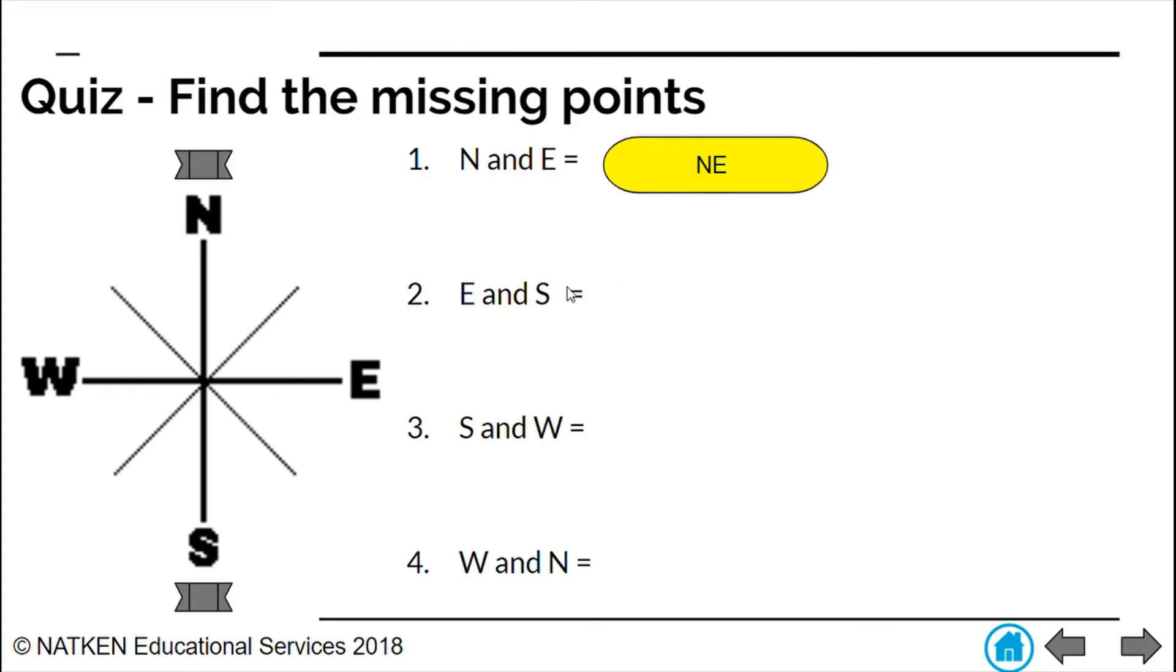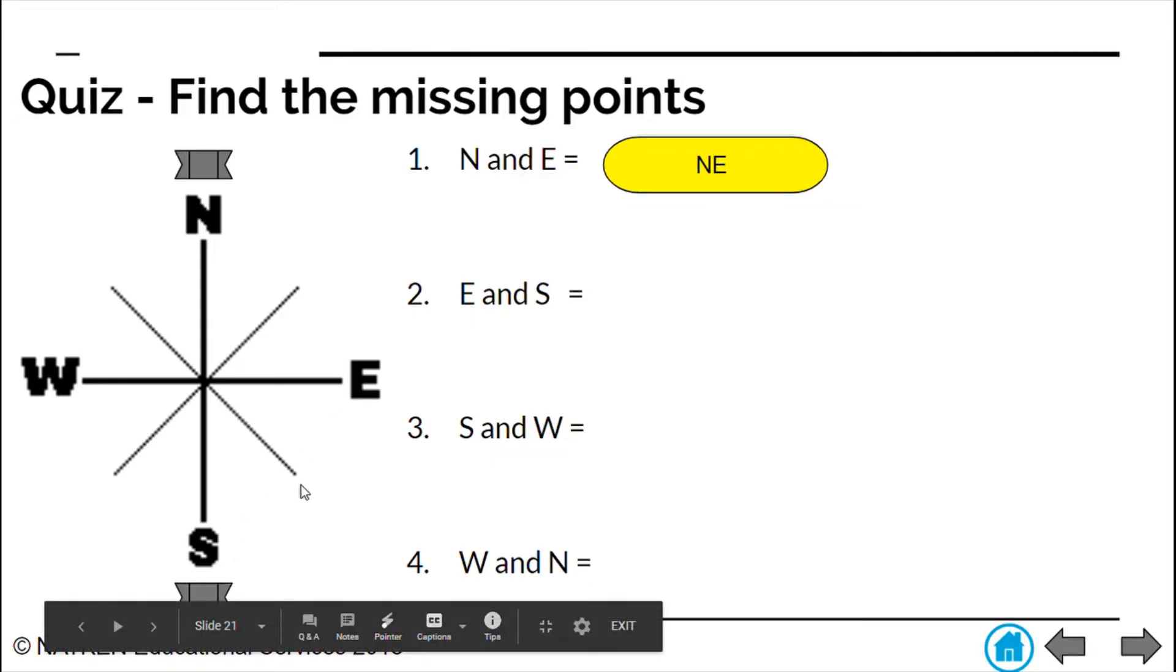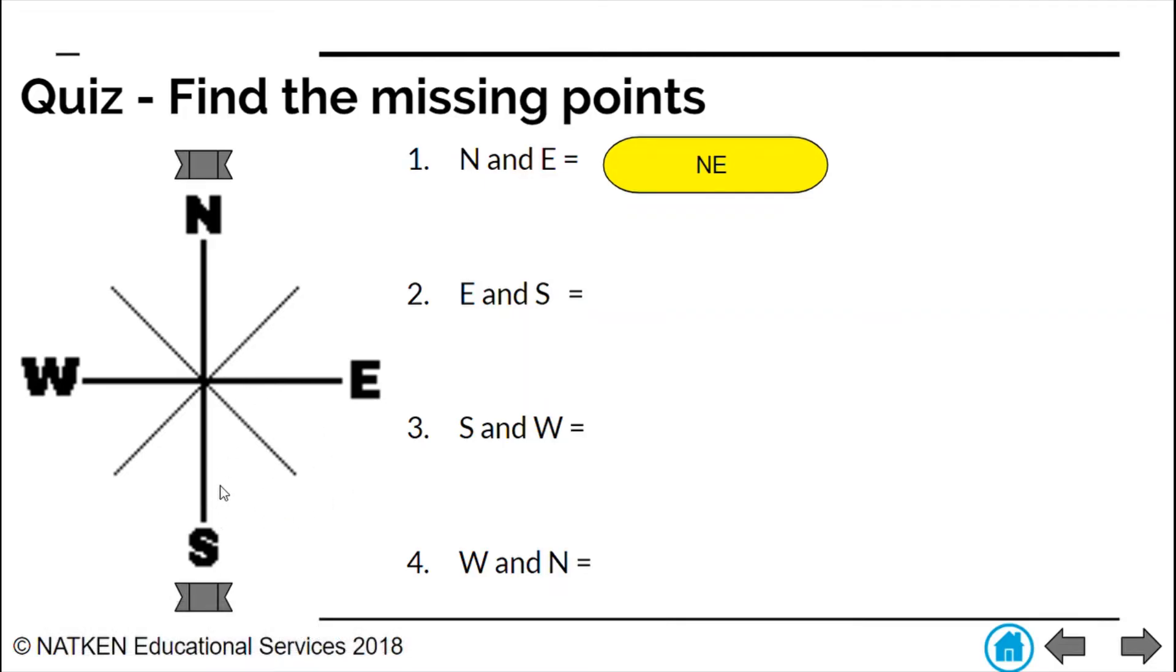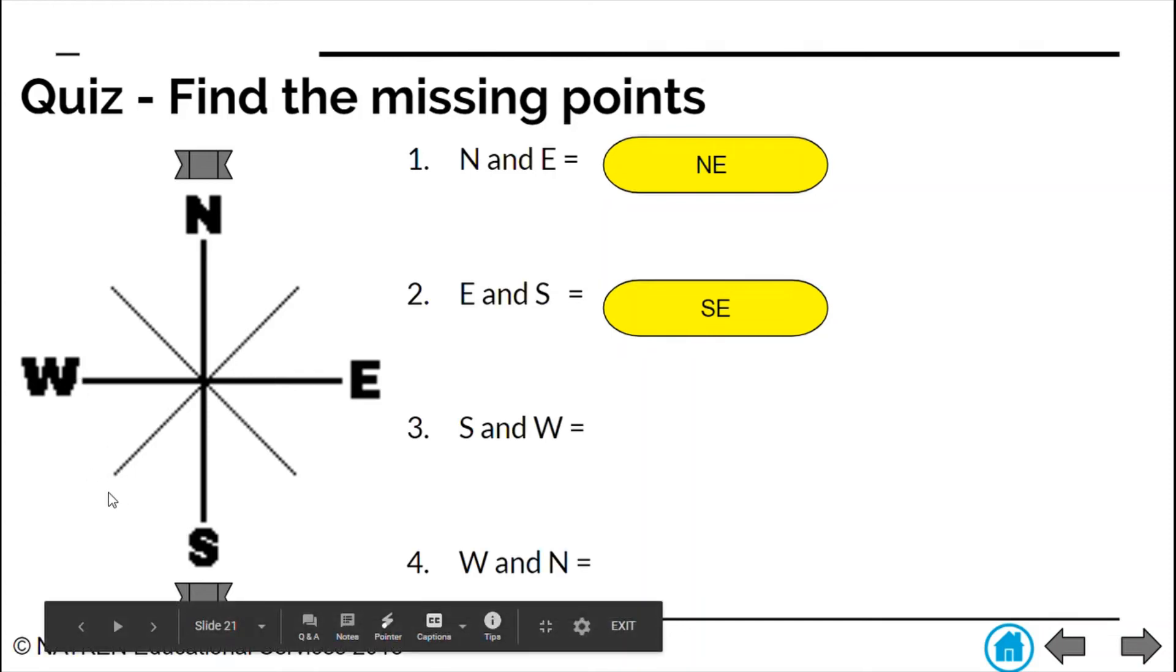Secondly, for east and south in between here we have this area blank. Again we have south which would have been our queen or royalty. So we would certainly put south first. So we would end up with south east. Then we have south and west or blank space here. South is our queen. Royalty, always go first.